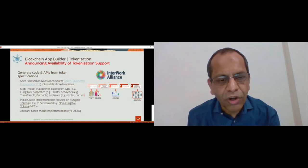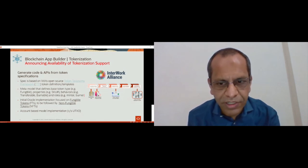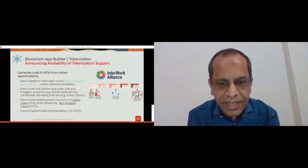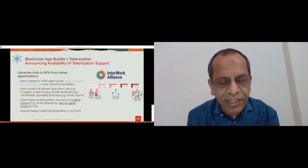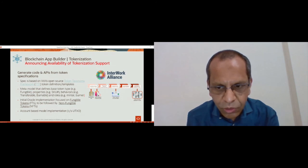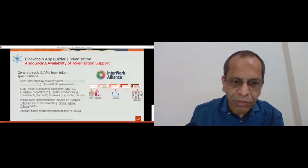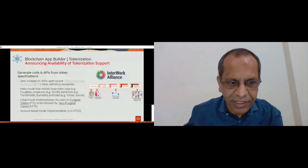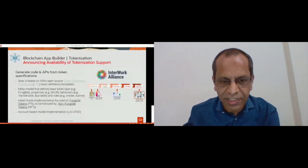For fungible tokens, as of now we are using the account-based model rather than UTXO. We believe the account-based model is much more scalable and easier to program with. Of course, the immediate question is about MVCC errors. We are also working on a solution for MVCC errors so as not to limit throughput — making it really scalable. We will be talking more about the solution we are putting together in Hyperledger Fabric itself to avoid MVCC errors with the account-based model.